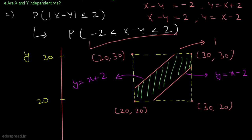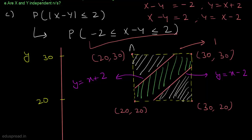Since the total probability in the square is 1, we can subtract the probabilities of the two corner triangles outside the band. Triangle ABC lies above the line y = x + 2, and triangle DEF lies below the line y = x − 2. Finding the probabilities of these two triangles and subtracting their sum from 1 gives the desired probability.